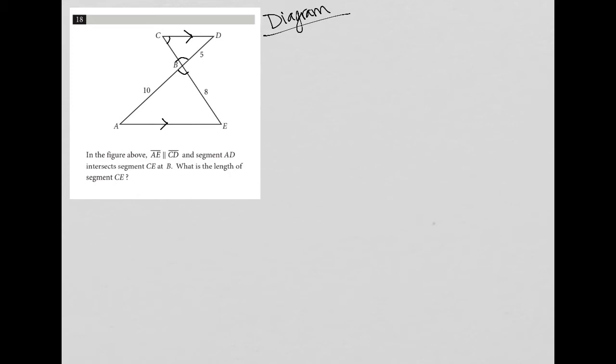Well, that would mean that angle C is congruent to angle E because of alternate interior angles. And angle A is congruent to angle D because of alternate interior angles.